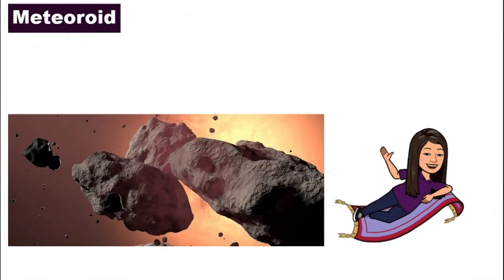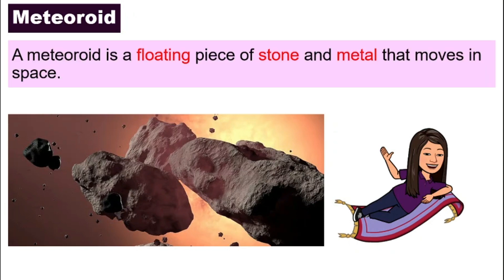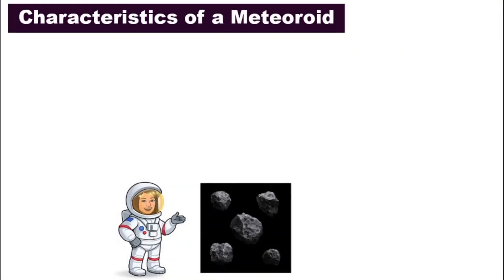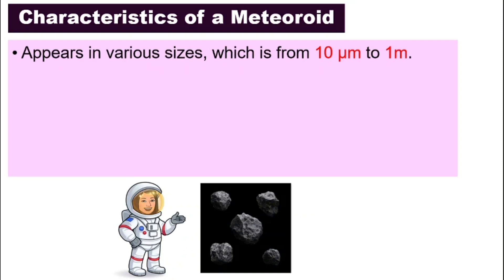So first, what is a meteoroid? A meteoroid is actually a floating piece of stone and metal that moves about in space. They move very freely and they do not have their own orbit, so they move as they wish. Meteoroids appear in various sizes, but they are relatively very small compared to asteroids and comets. They are only about from 10 micrometers to 1 meter.